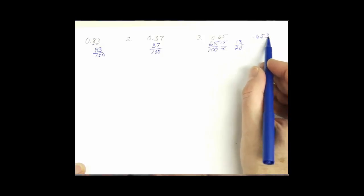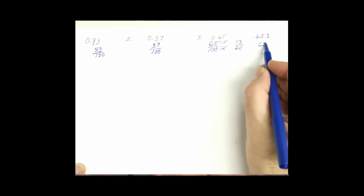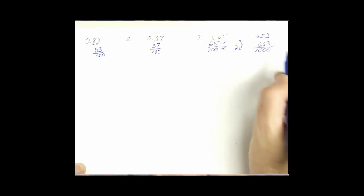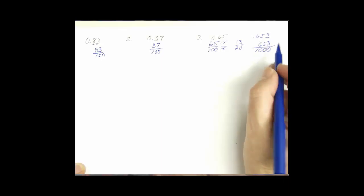So we would have 653 over 1,000. And then we check to see if we can reduce.